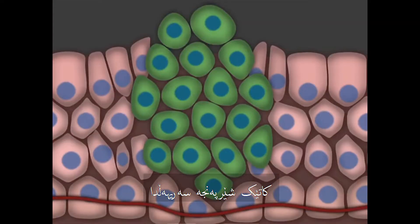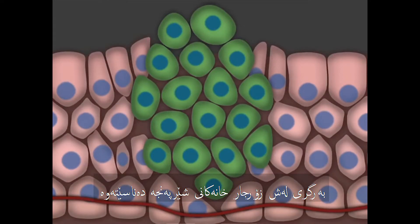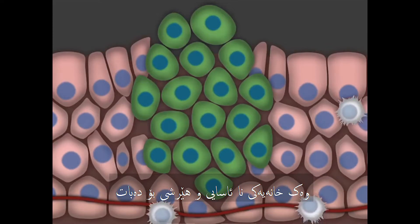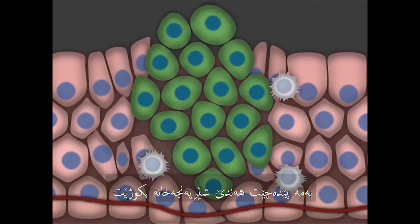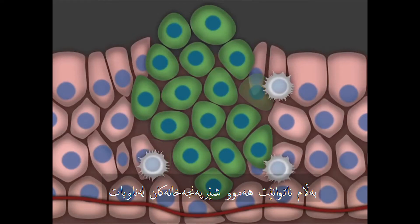When a cancer starts, the body's immune system will often recognize the cancer cells as abnormal and attack them. This may kill some cancer cells, but it can't get rid of all of them.